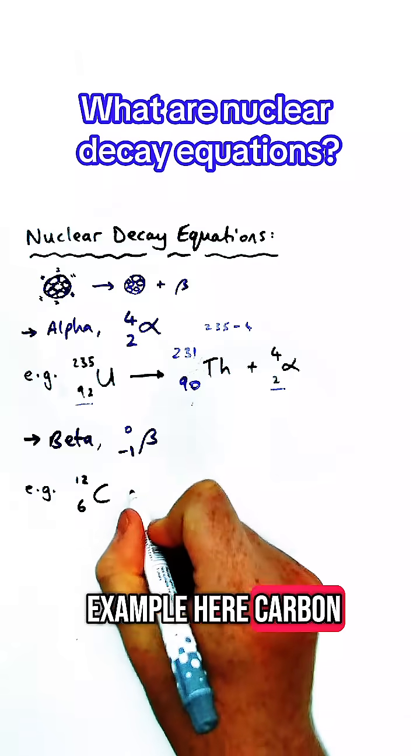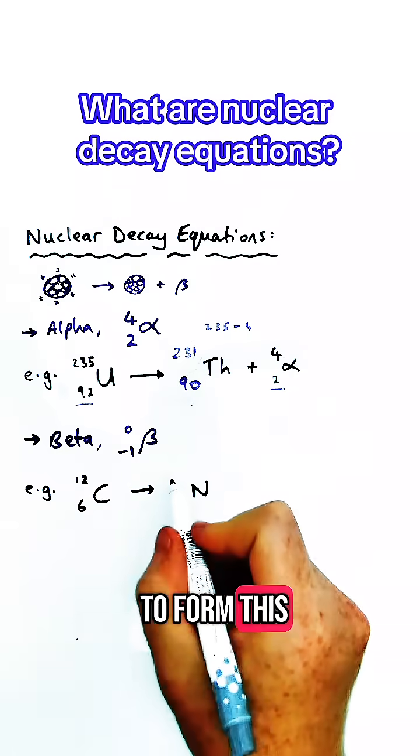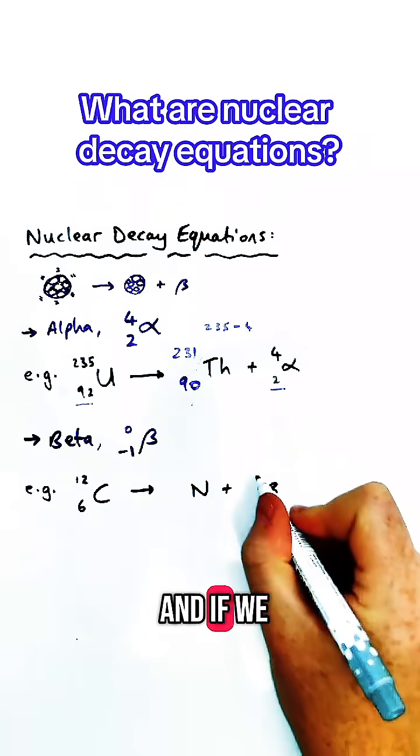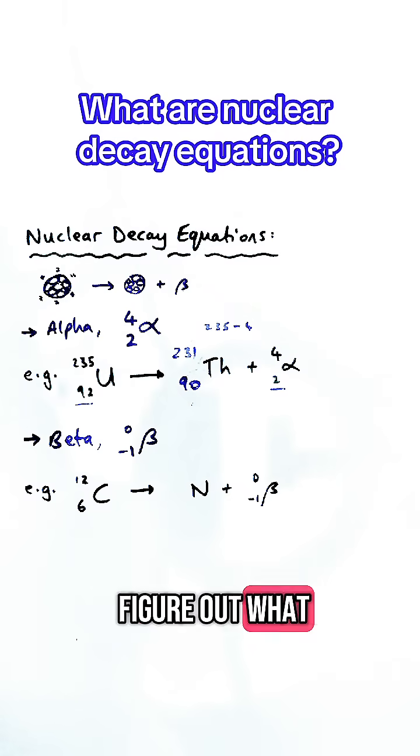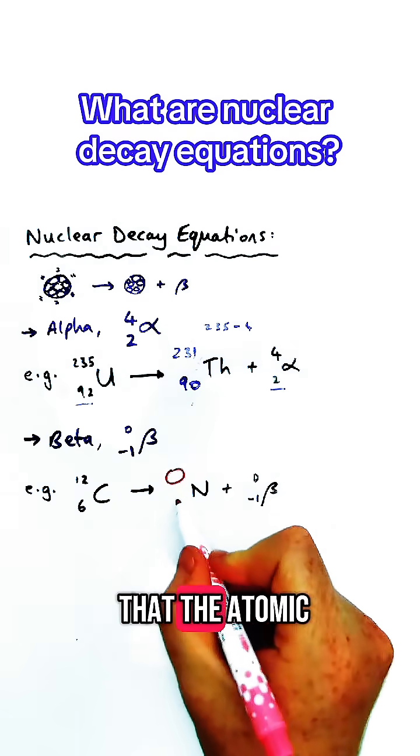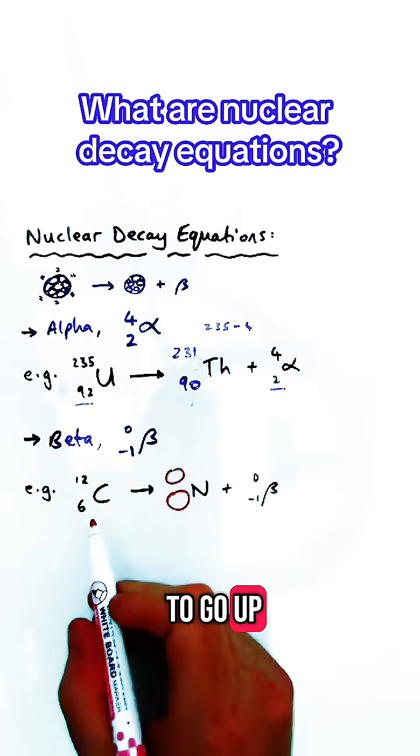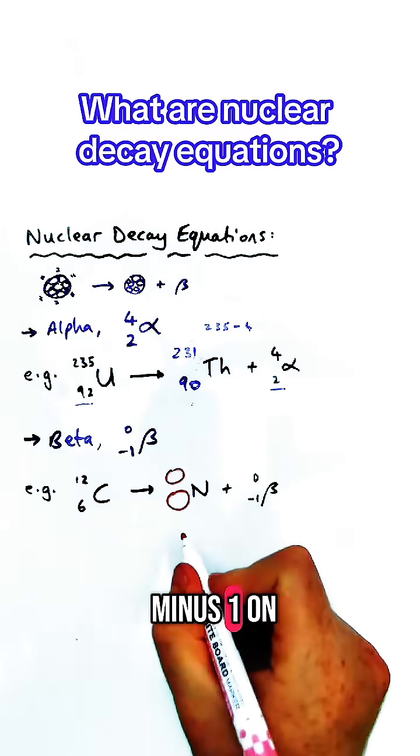So in this example here, carbon 12 has decayed to form this new element, nitrogen. And if we look at the numbers again and try and figure out what the mass number and the atomic number of nitrogen might be, we can see that the atomic number has had to go up by 1 because there's a minus 1 on the beta particle.